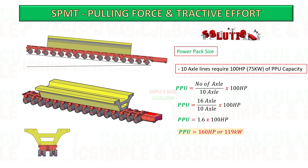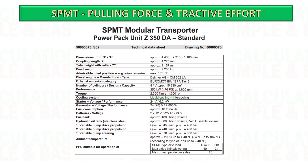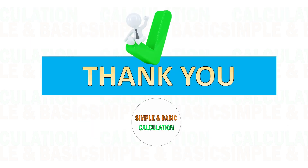Now you can select the required power pack horsepower based on this result. This calculation is only for power pack unit sizing. You also need to consider the stability of your cargo, which may require increasing the axle lines or arranging them side by side.